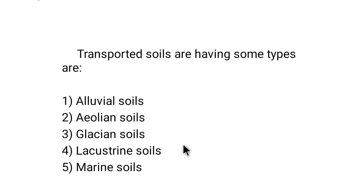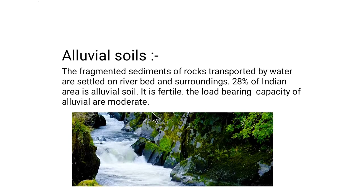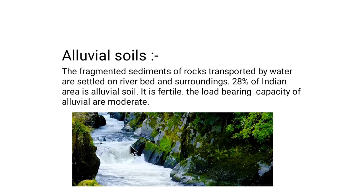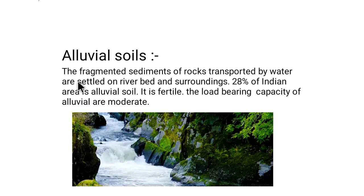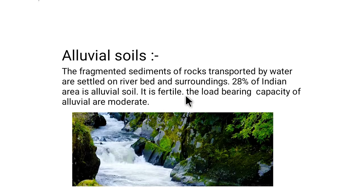First is alluvial soil. Alluvial soils are formed by rivers — they are deposits made by running water. Soil particles carried inside running water settle on the riverbed and surroundings. 28% of India is alluvial soil. It is fertile, and the load-bearing capacity of alluvial soil is moderate.